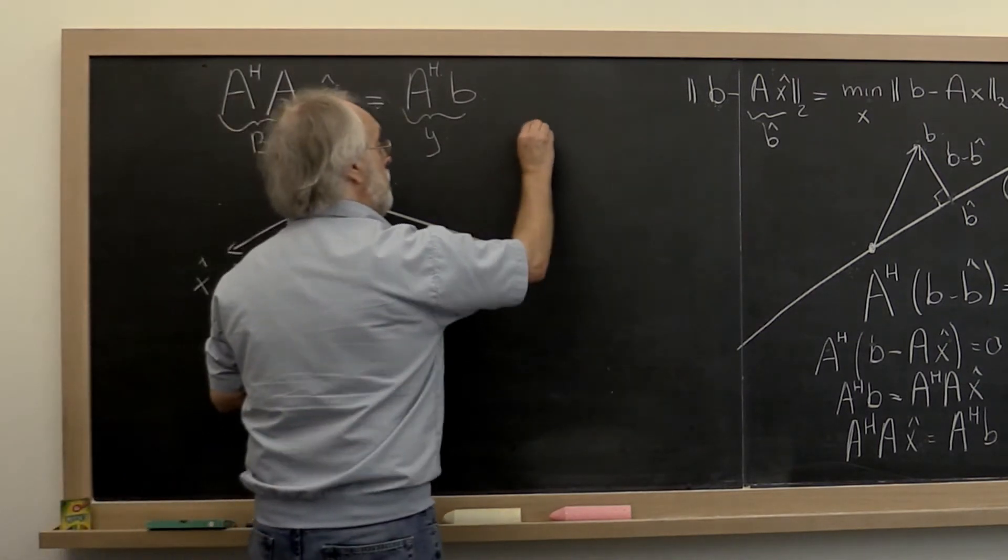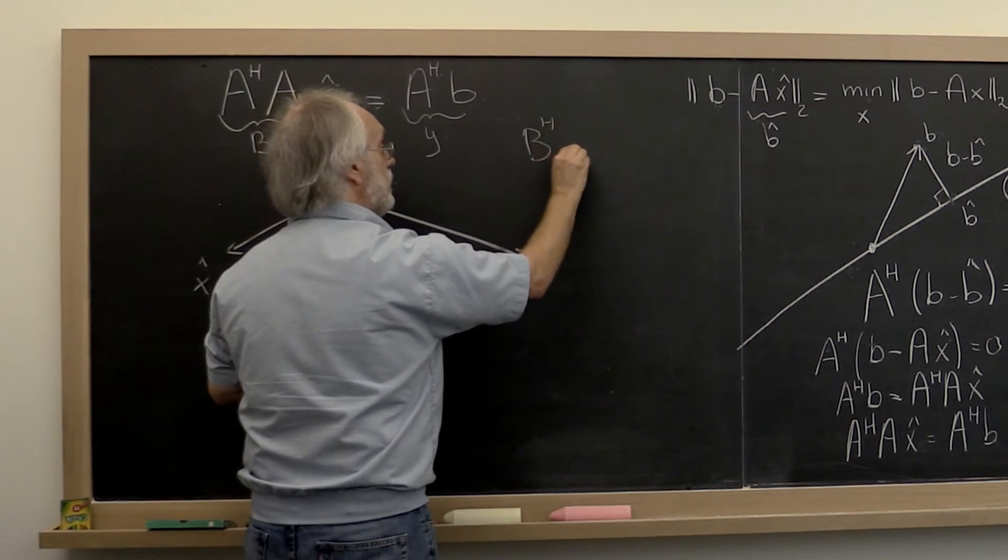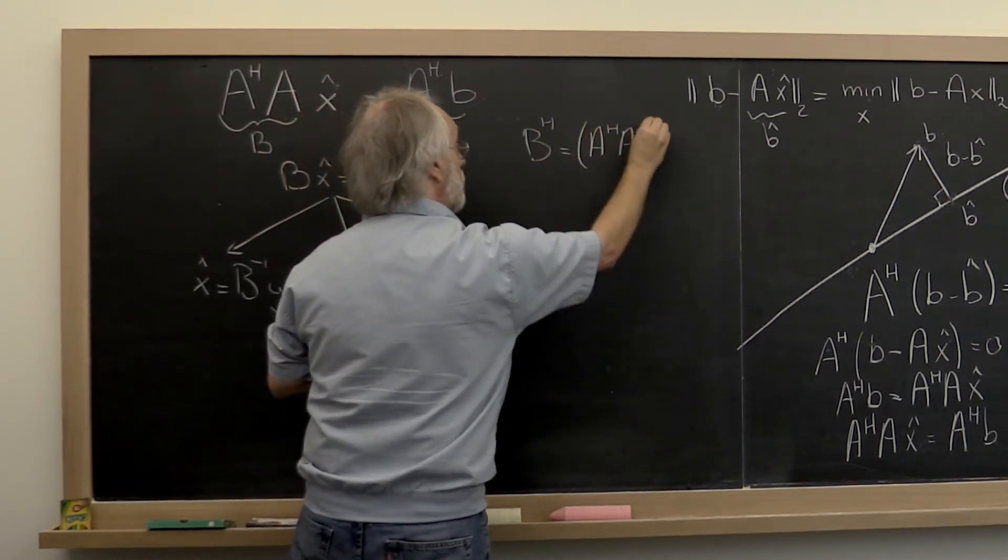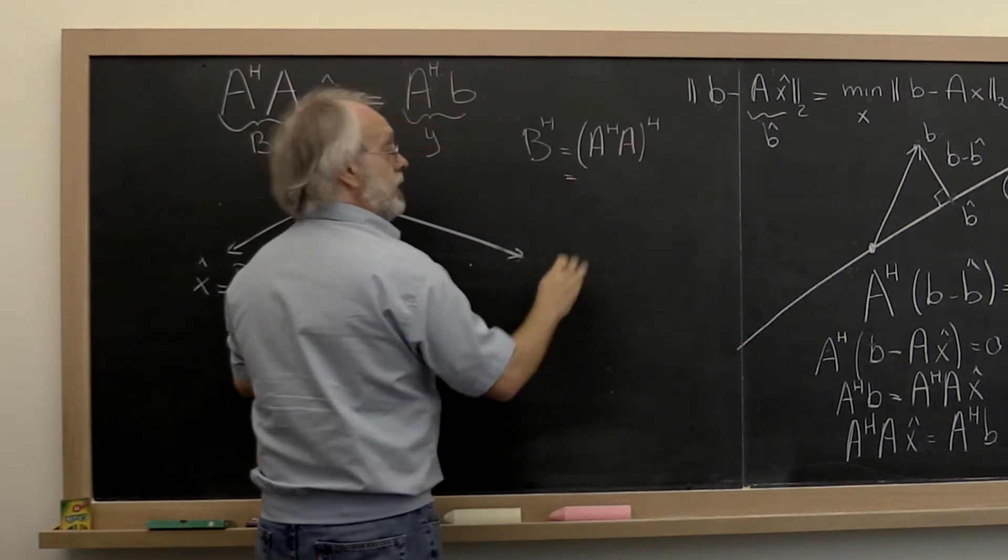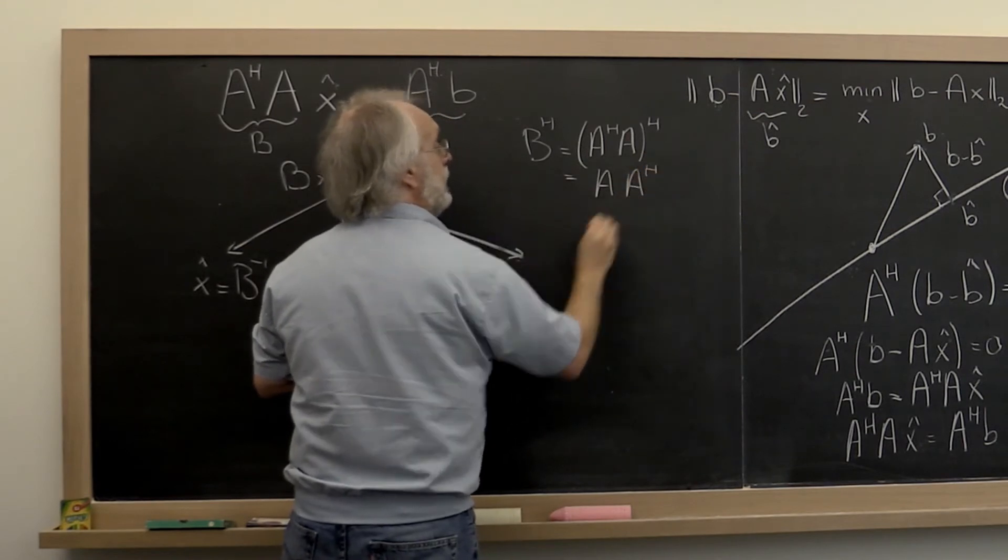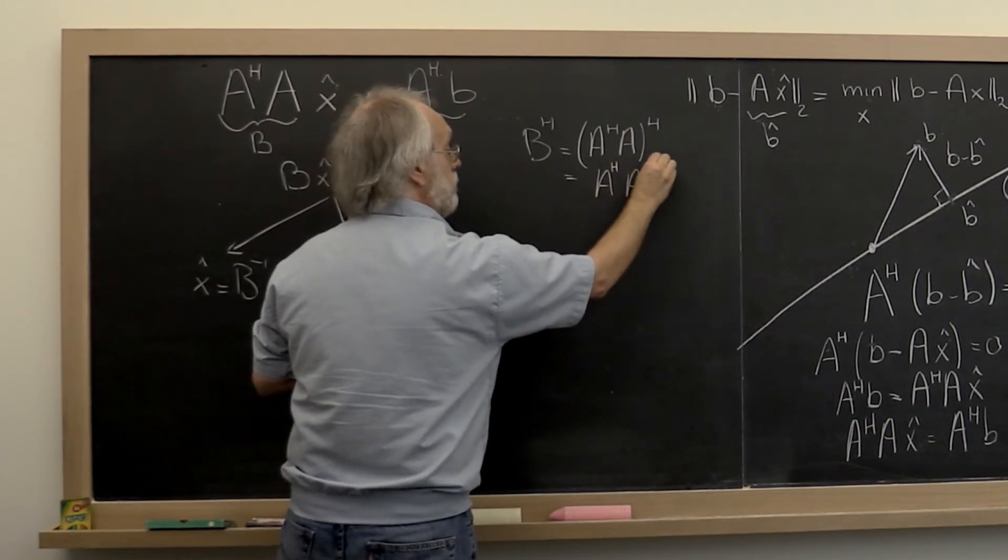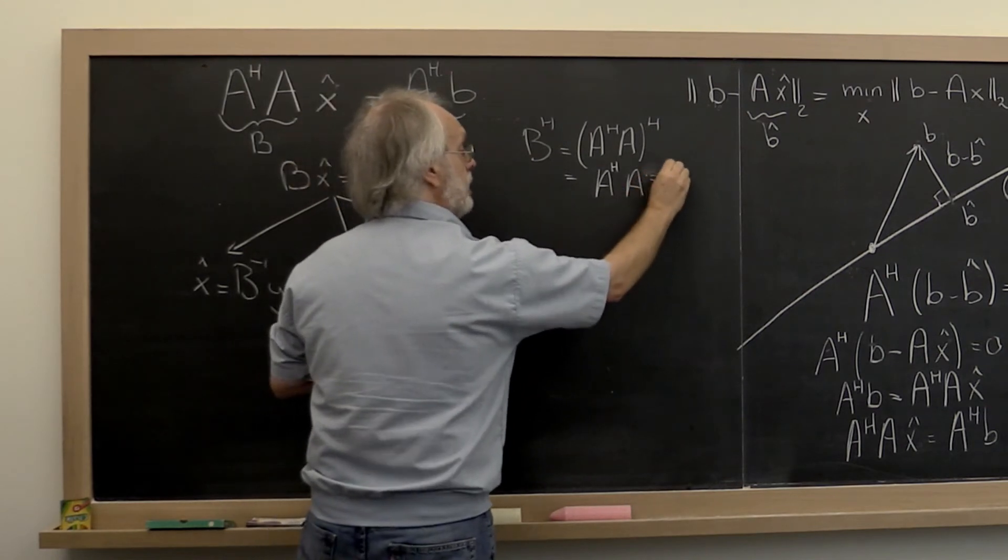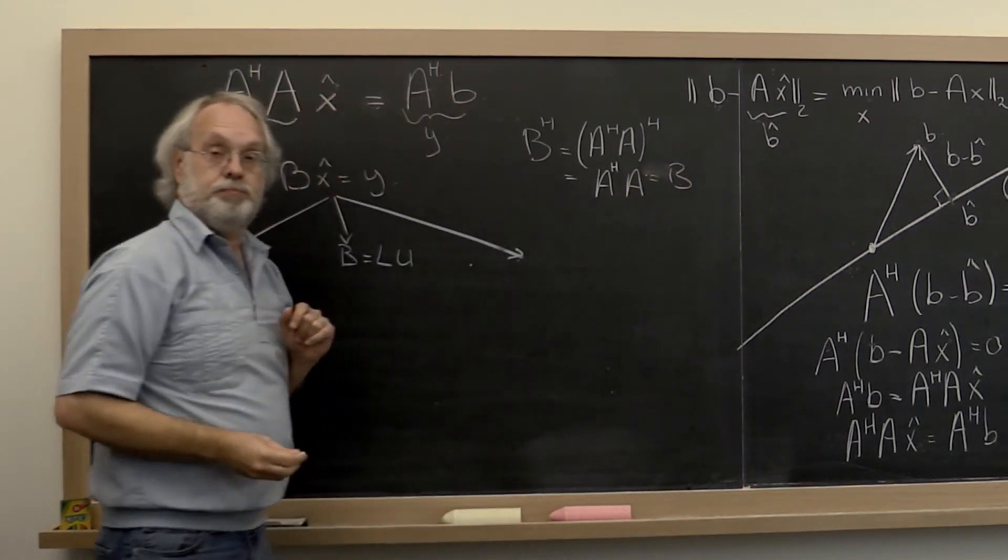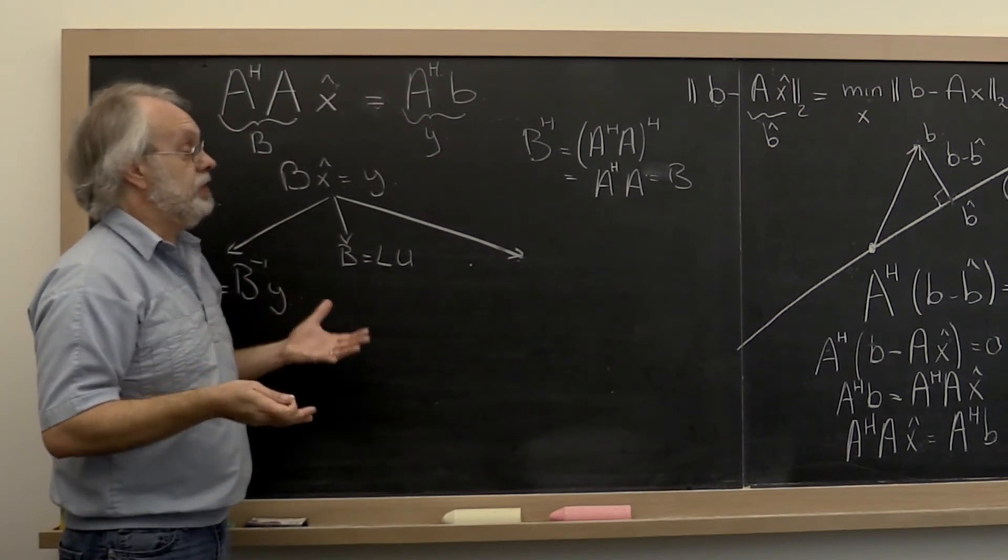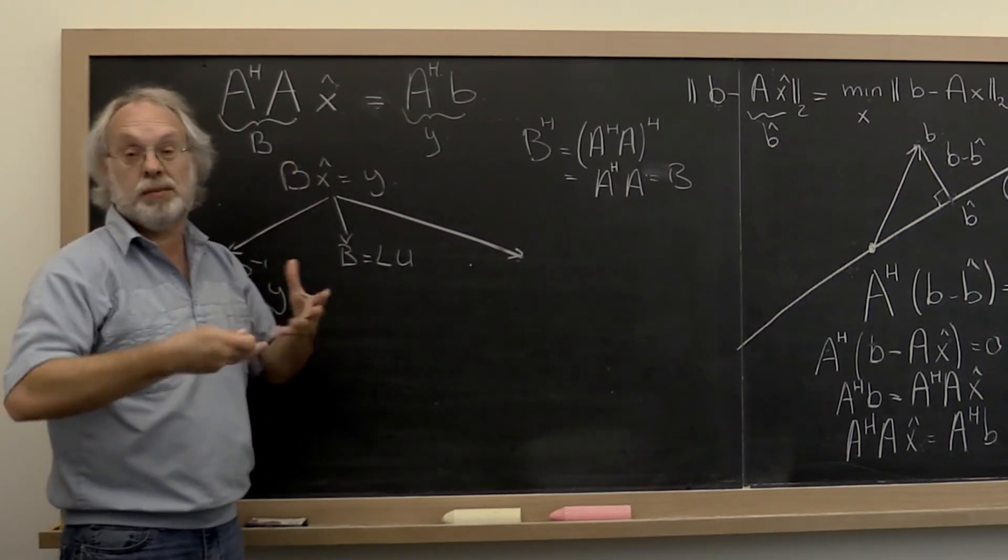If you look at B Hermitian transpose, that is equal to A Hermitian transpose times A Hermitian transpose. And you may remember that what you do is you flip the order of these two and then you take the Hermitian transpose of each. But that of course is just A and you notice that it is actually equal to B. So it's Hermitian. It is symmetric except in the complex sense.